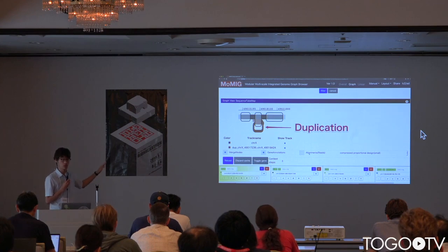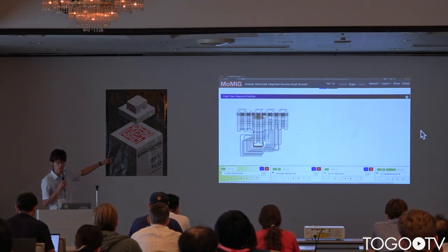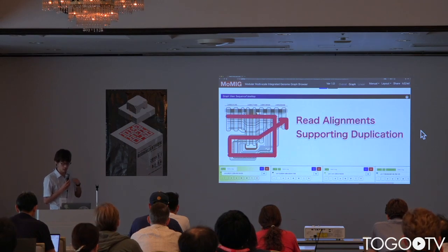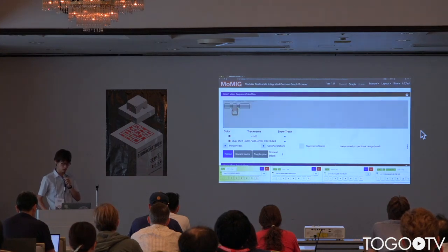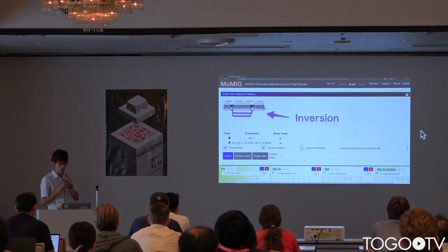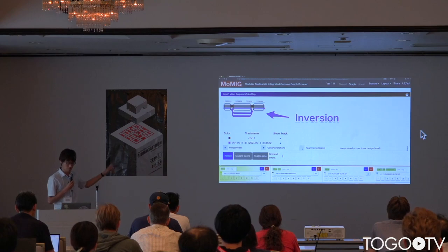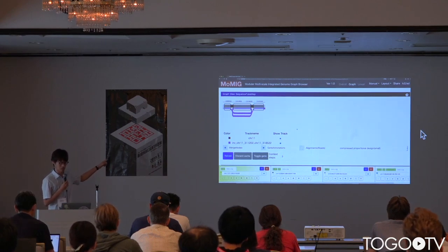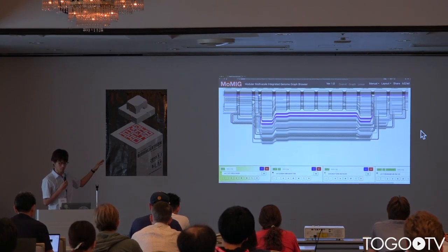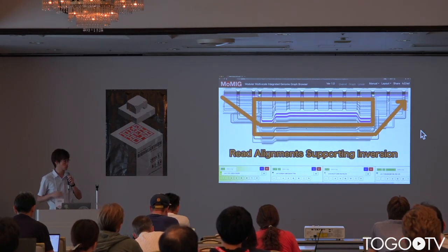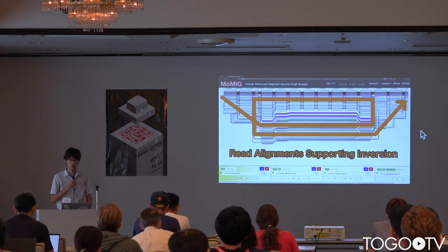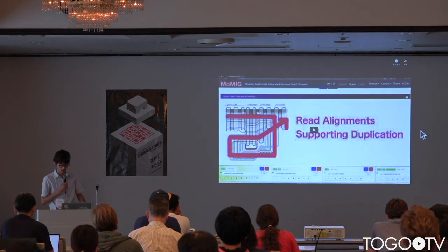This is an example of duplication. The duplication is represented as loops of paths, and this is also validated by read alignment. The next example is inversion, which is also represented as a loop of paths. All features in this demonstration are automatically generated using Momiji.